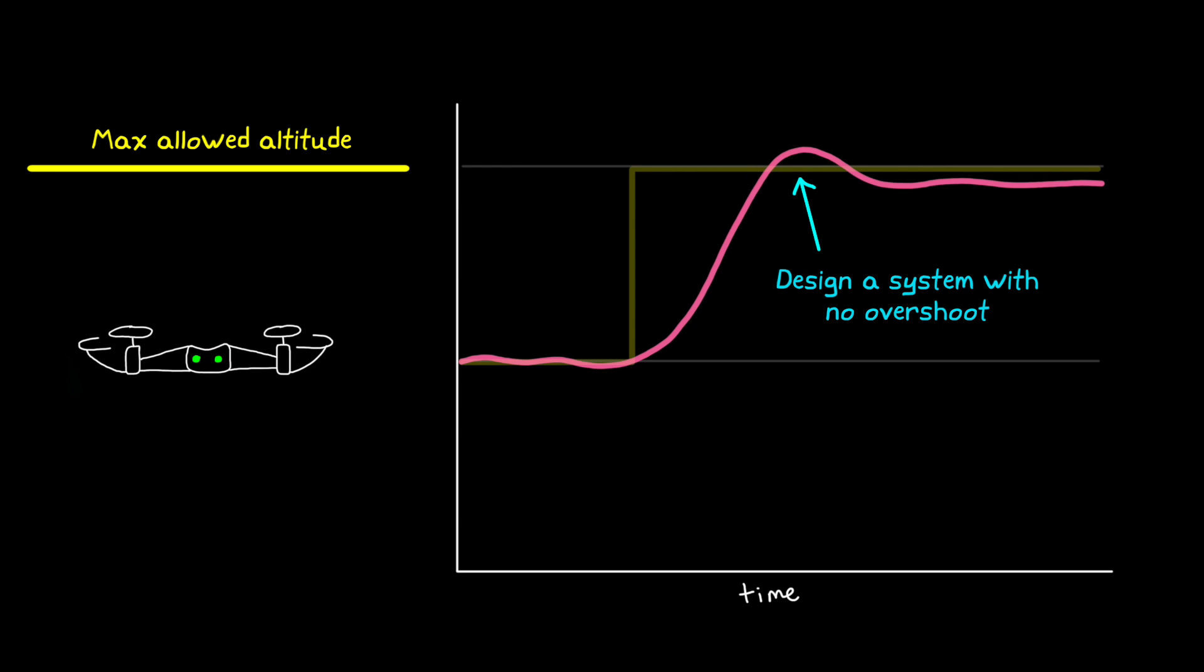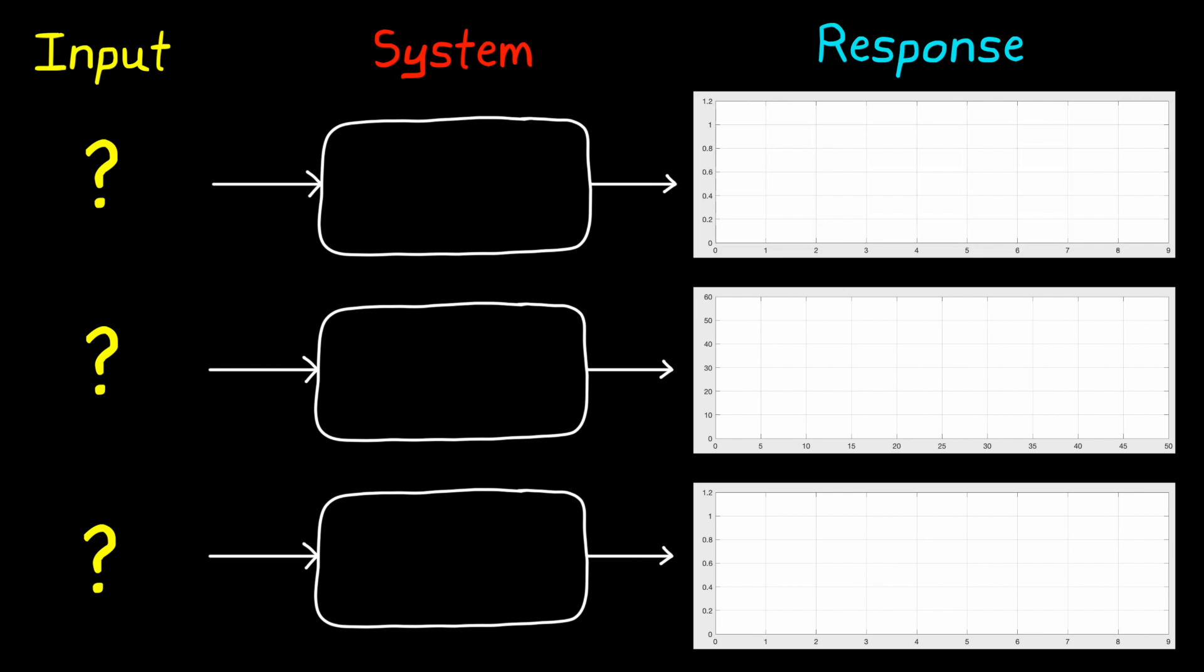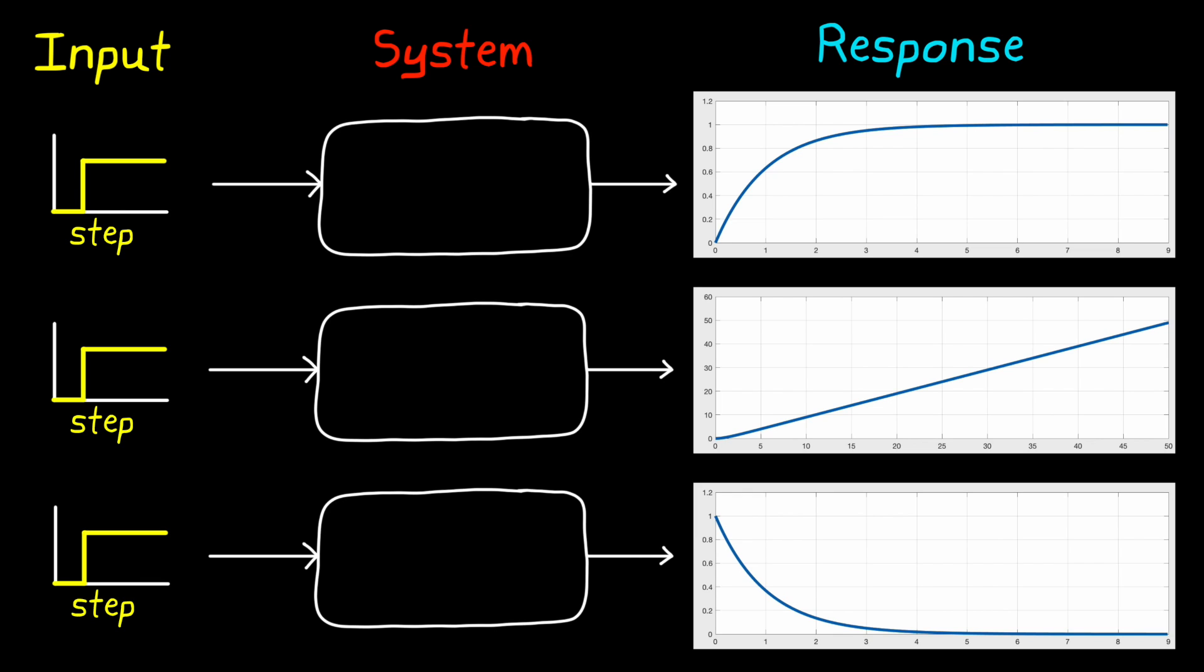Now we're going to talk more about step response requirements in just a bit, but first I have a question for you. And it's something that tripped me up early on and I want to make sure it doesn't do the same to you. The question is, what does a step response look like? I'm going to generate three different plots, representing a system response to an unknown input. The first plot rises asymptotically to one. The second plot rises forever in a straight line. And the third plot decays exponentially. Which of these do you think are responses to a step input, versus some other input signal like an impulse or a ramp? Okay ready? It's a trick question. All of these are step responses. Let me explain.